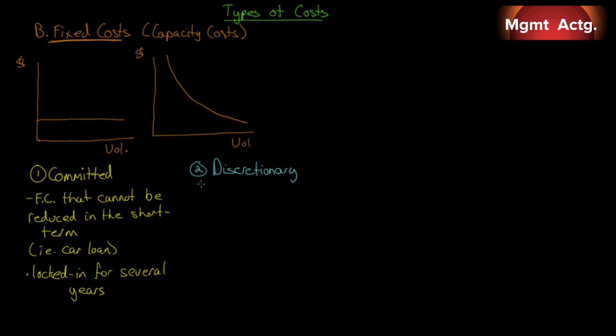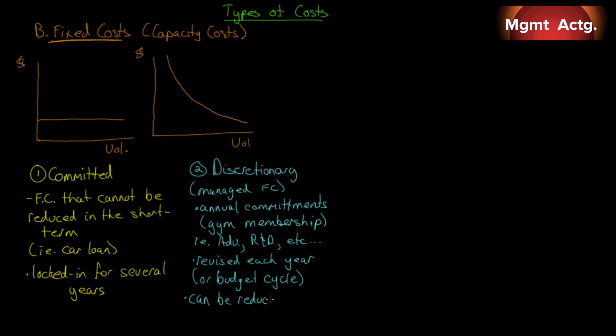But they can also be discretionary. Think about your gym membership. You go to the gym, you buy a membership for the next year. For the next year, you're going to pay a certain amount of money, but you don't have to renew it. You just have to pay out the year. So it's discretionary in the sense that you didn't have to incur that fixed cost, but you did, and it's only for a short period of time. These discretionary fixed costs typically have just annual commitments. So we can think of advertising, research and development, employee training. We could set a million-dollar advertising budget at the beginning of the year, three months in, realize that this is not working, and we can cancel the rest of it. It can be reduced or eliminated in the short term.